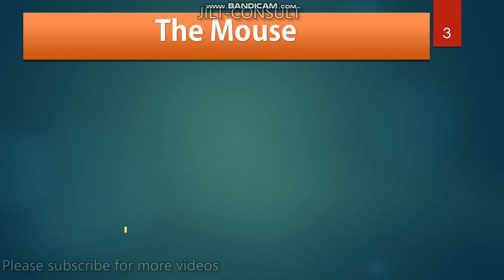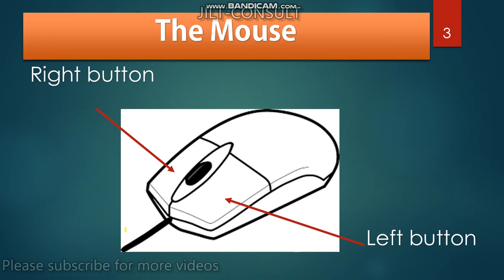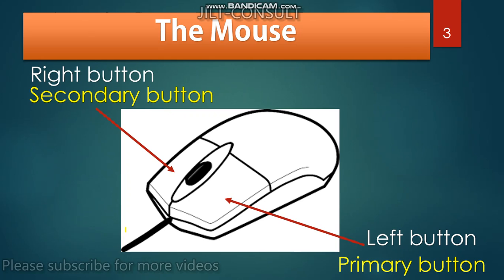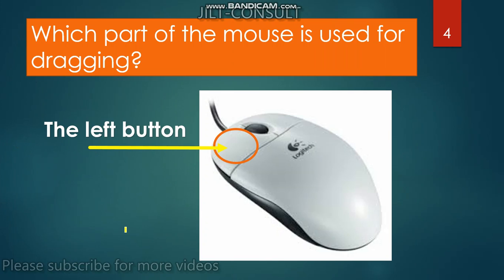Let's discuss the part of the mouse that is used to drag. We have the computer mouse with the left mouse button and the right mouse button. The left mouse button is also known as the primary button. The left button is the one used for dragging.